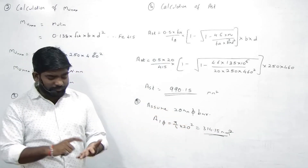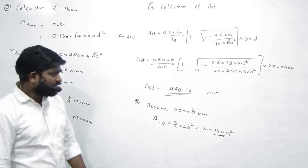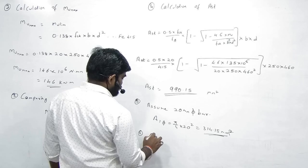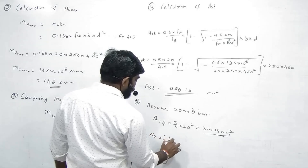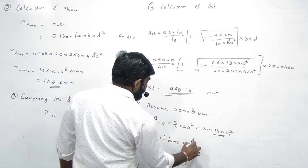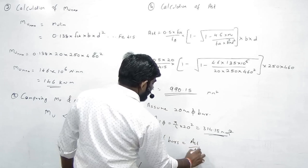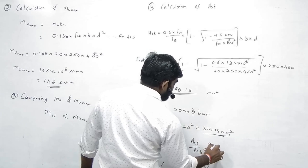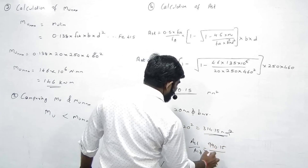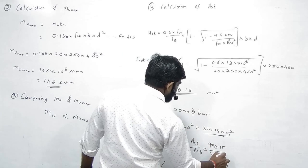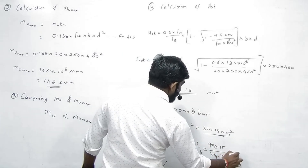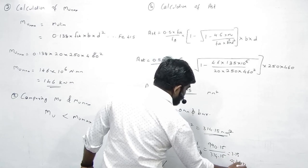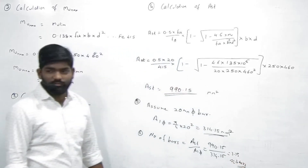Number of bars = total AST divided by area of one bar = 990.15 / 314.15 = 3.15, approximately 4 bars. 3 koi nahi dega — 4 bars chahiye.